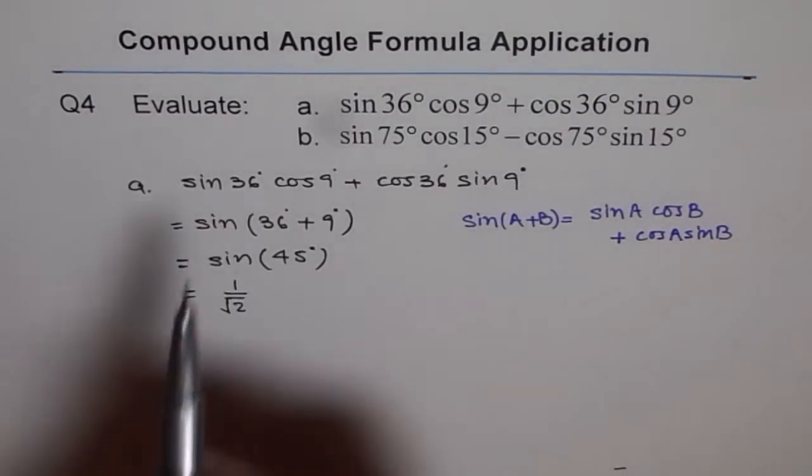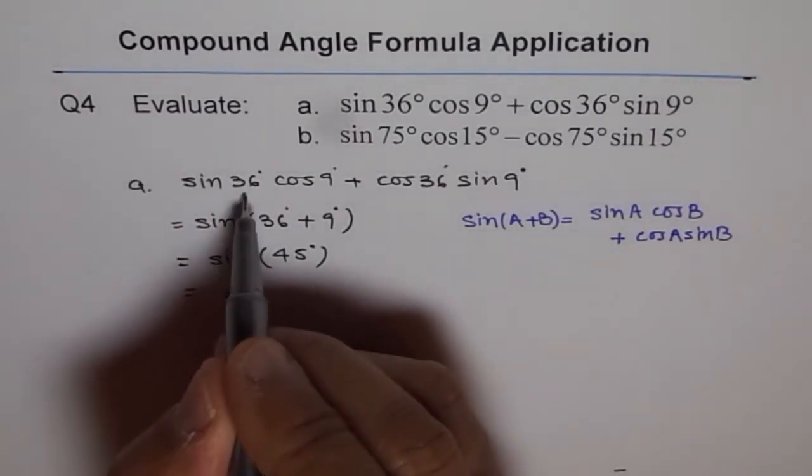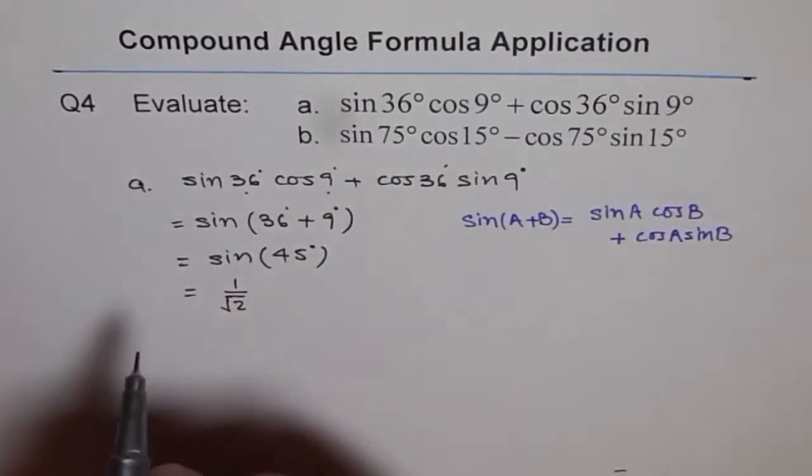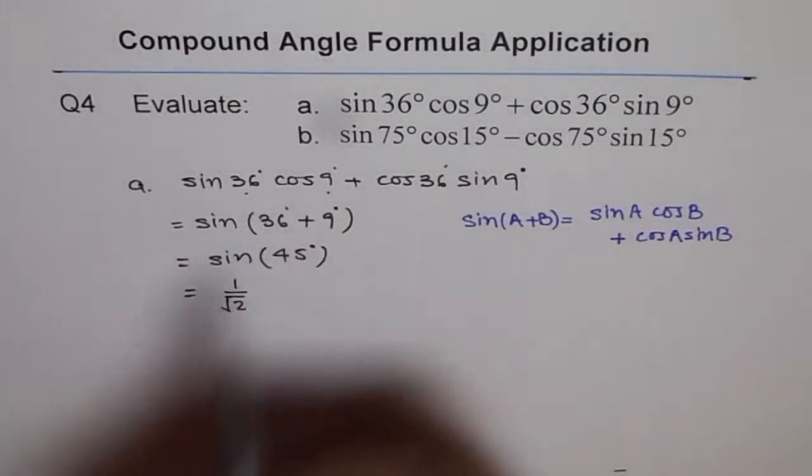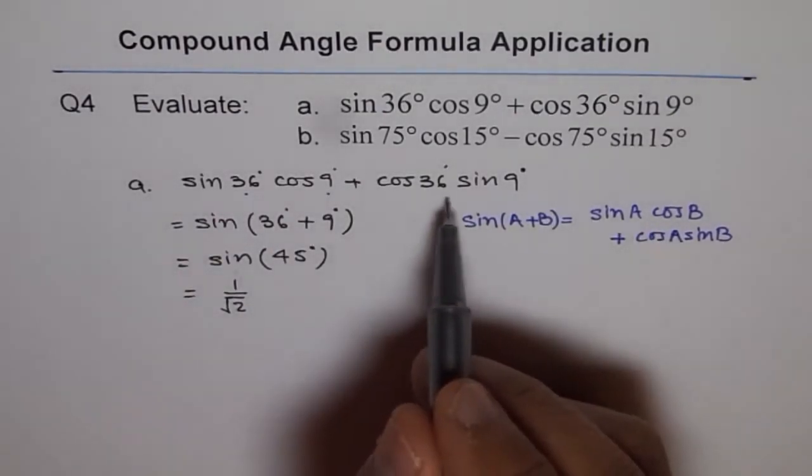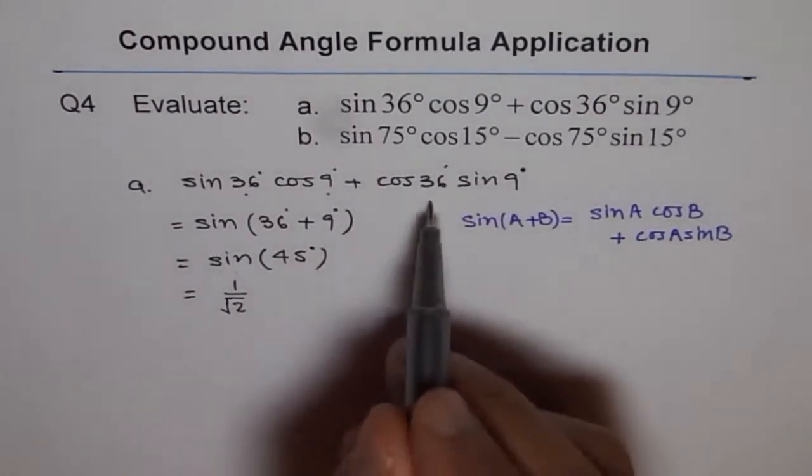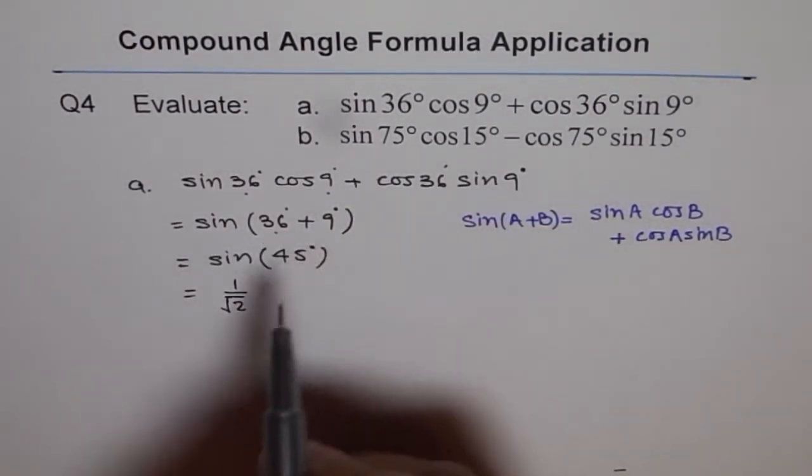So we use this formula because this is like sin A. This is my A, and this is B. So it is sin A cos B, where A is 36 and B is 9. Cos A sin B, and that is equal to sin(A+B).